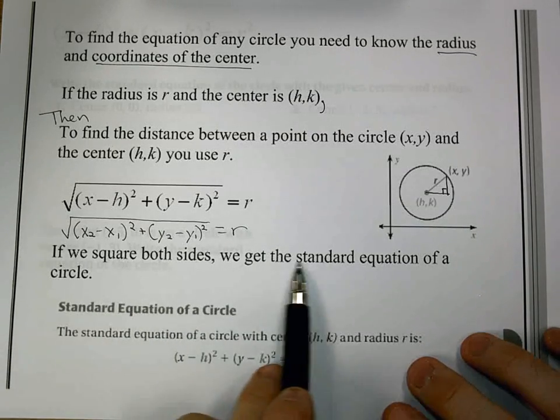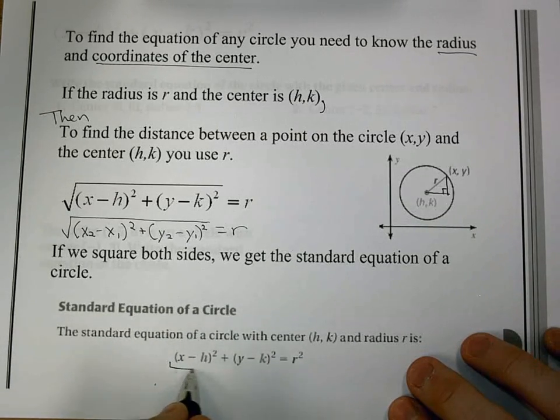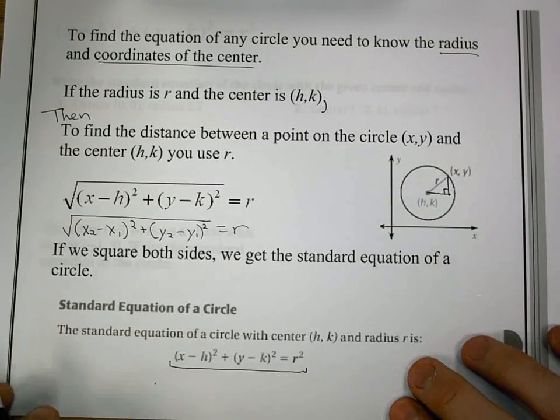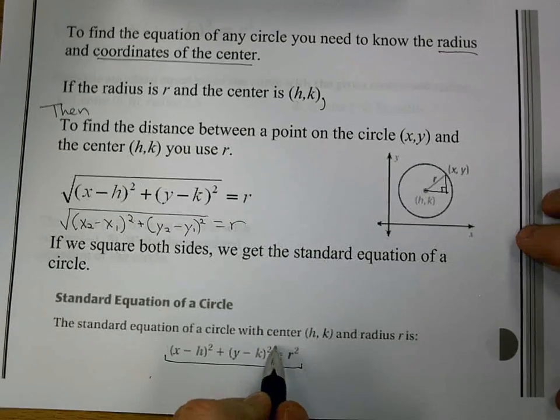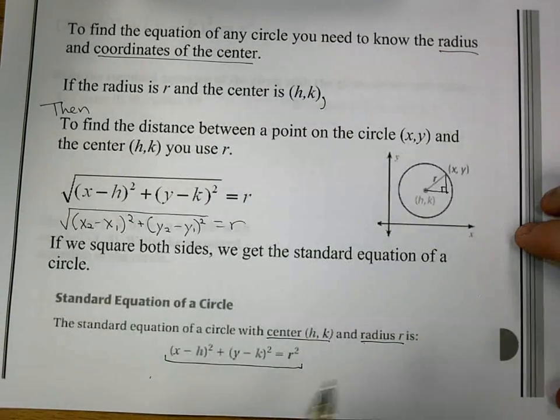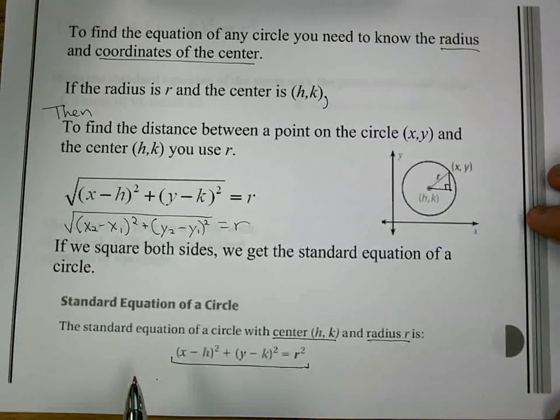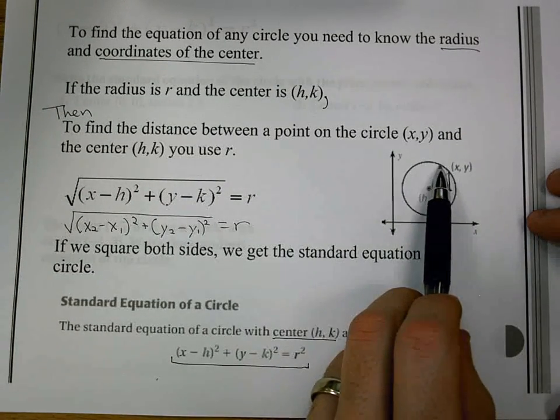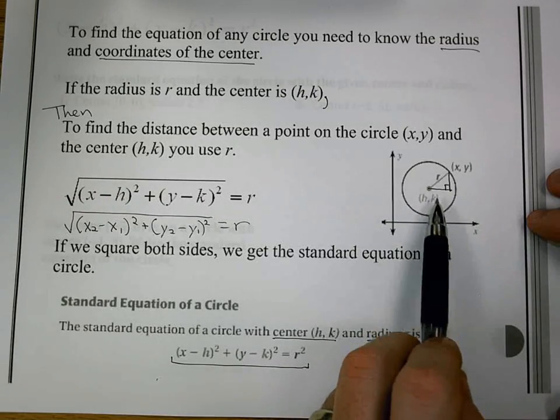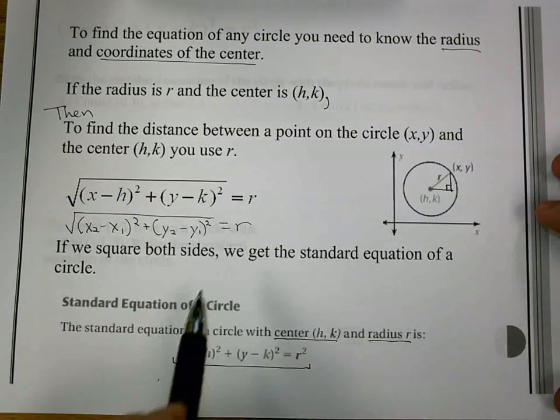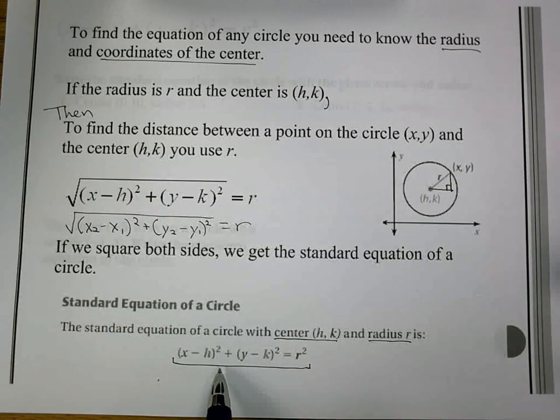Now, if we square both sides, we get our standard equation. And that is (x-h)² + (y-k)² = r². But make sure you know that the center is (h,k) and the radius is r. So it's finding those points on the circle that are some radius away from our center, no matter where it is. This will work on any graph we look at of a circle. It doesn't have to be at the origin, because we have that h and k as our center.